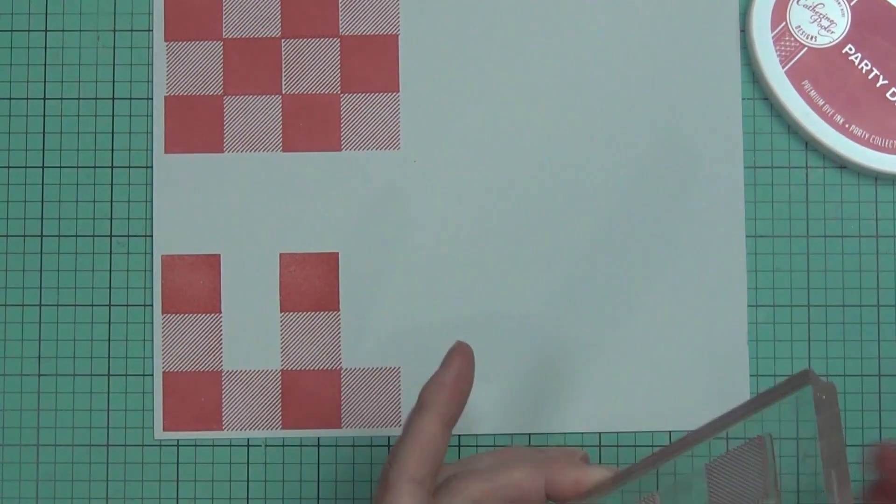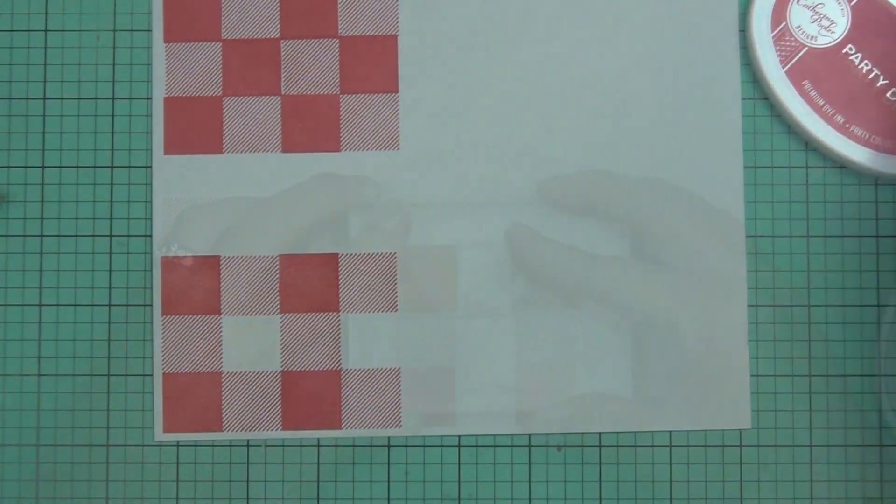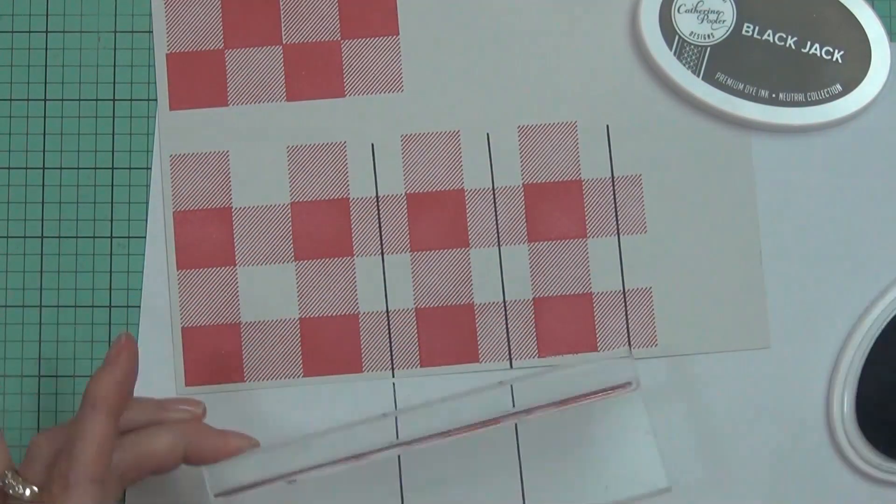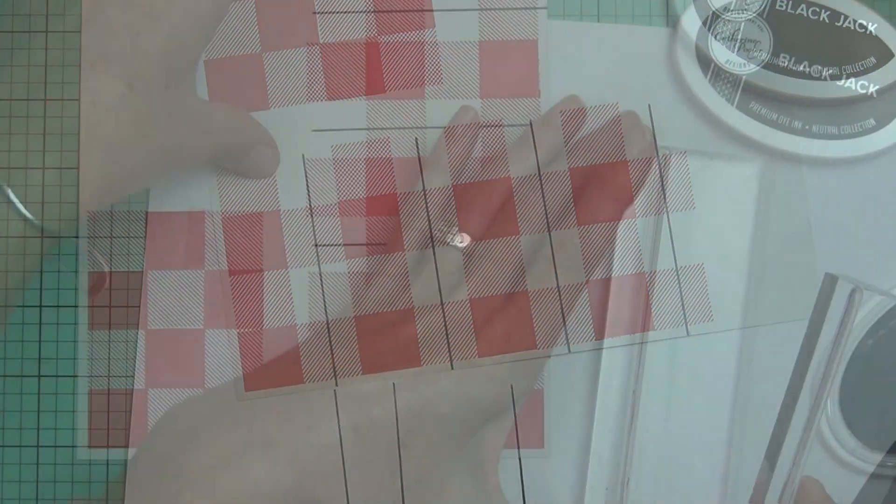So I'm doing two different designs here using the Party Dress ink from Catherine Pooler and stamping it directly onto some Oyster Gray cardstock. I thought it'd be nice to use the gray in the background.